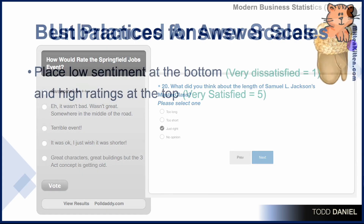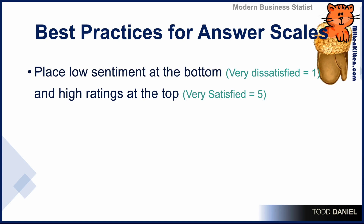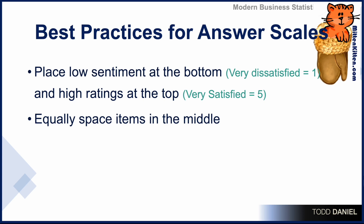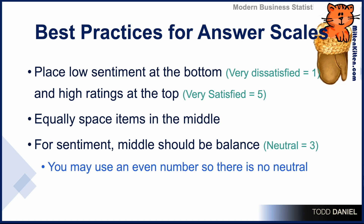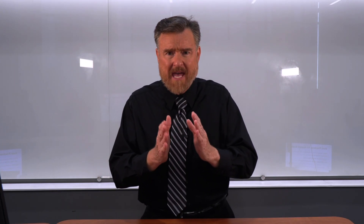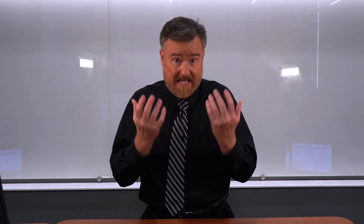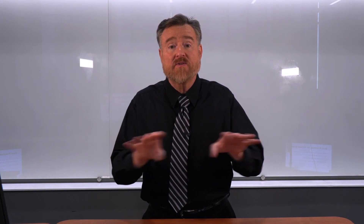Here are some best practices for your answer scales. Place low sentiment at the bottom — very dissatisfied equals one — and high ratings at the top — very satisfied equals five. Create equally spaced items in the middle with a middle value being neutral or a balance point. If you do not want to have a balance point, you can use an even number of answers so that there is no neutrality, for cases where you cannot truly be neutral on a question.